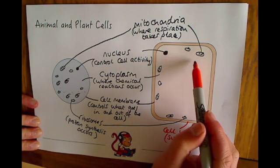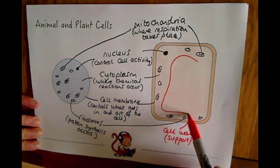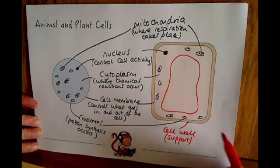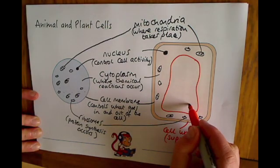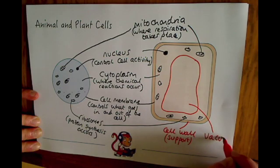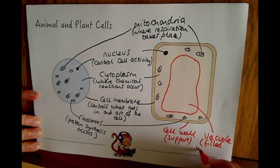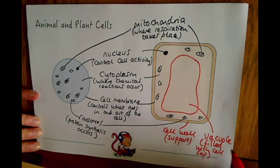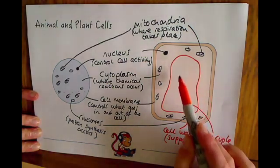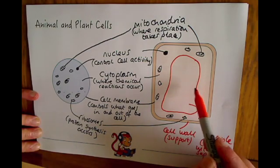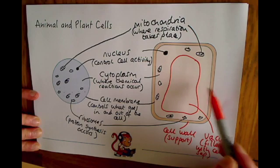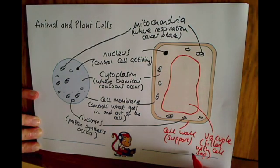They have a vacuole in the middle. And this is filled with cell sap. So this is filled with like sugars and things like that, which we call cell sap. And this also works to give the cell shape and structure to it as well, because when this is full up with cell sap, it allows the cell to keep its shape. So it also helps keep the cell's shape.